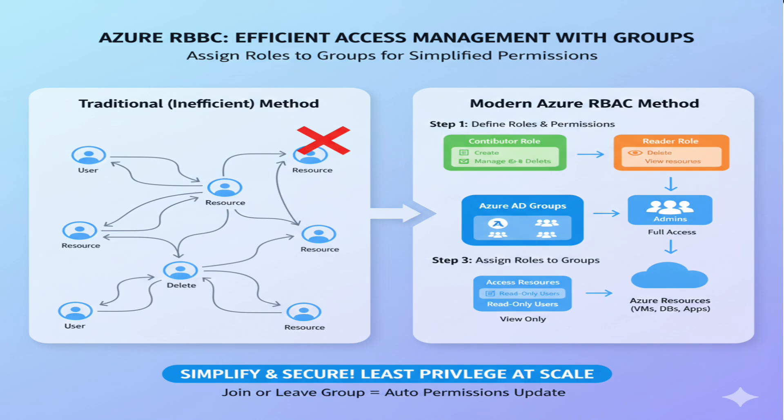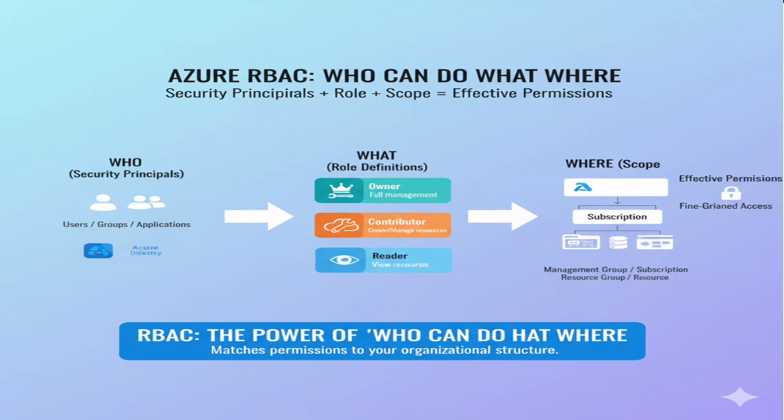RBAC works perfectly with groups — you can assign roles to entire groups rather than individual users, making management much more efficient. It allows you to assign different permission levels through built-in roles like owner, contributor, reader, and user access administrator. You can assign these roles directly to the groups they've already created, so when someone joins or leaves a group, their permissions automatically adjust. RBAC follows the principle of least privilege, ensuring users only get access to what they need. RBAC operates on who can do what where: security principals — users and groups — get role definitions — permissions — at specific scopes: subscription, resource group, or resource level.